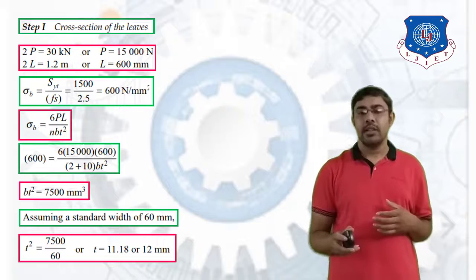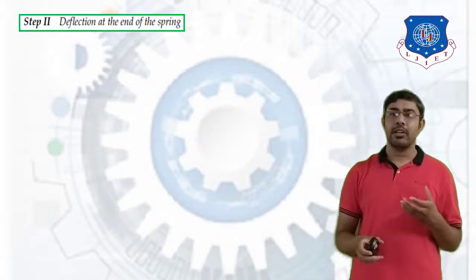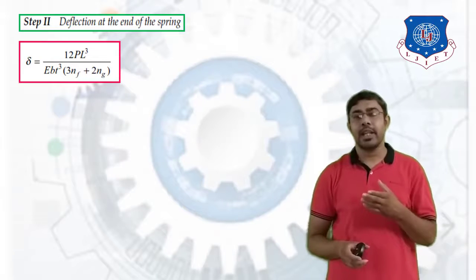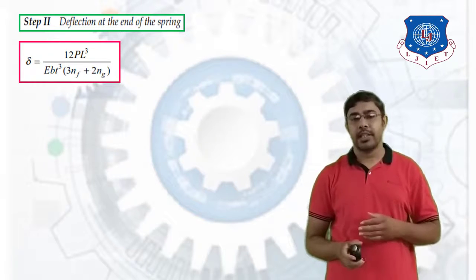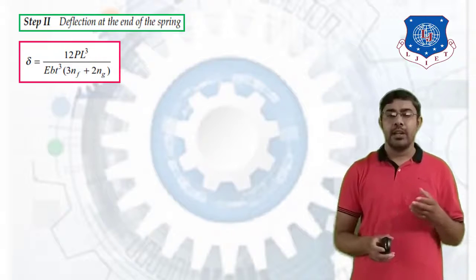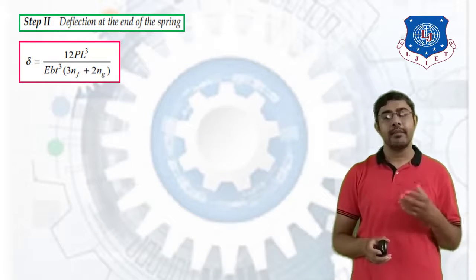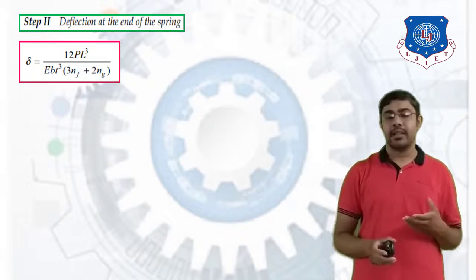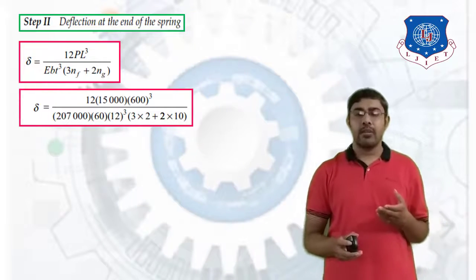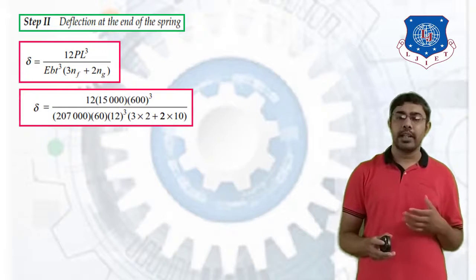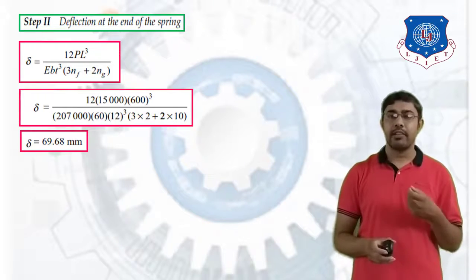For the second part, calculate the deflection at the end of the spring using the equation delta = 12·P·L³ / (E·b·t³·(3·NF + 2·NG)). With NF = 2, NG = 10, b = 60 mm, t = 12 mm, P = 15,000 N, and L = 600 mm, substituting all values gives delta = 69.68 mm. This is the required deflection at the end of the spring.